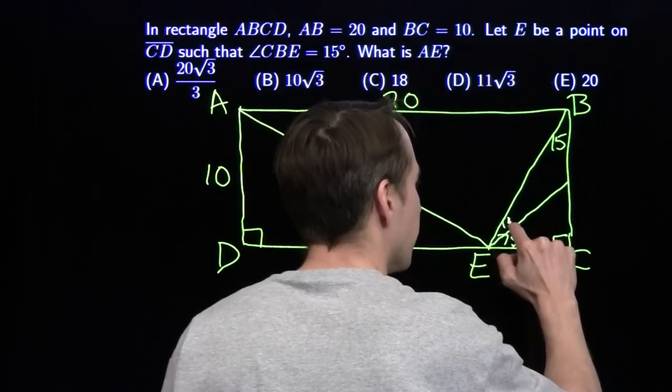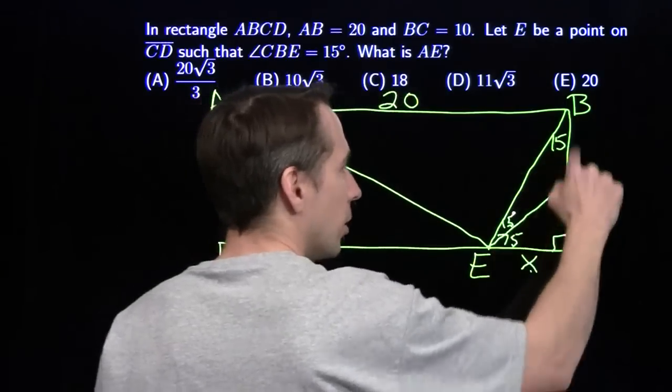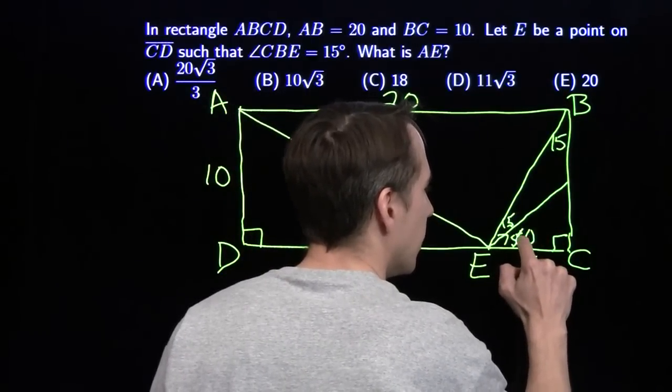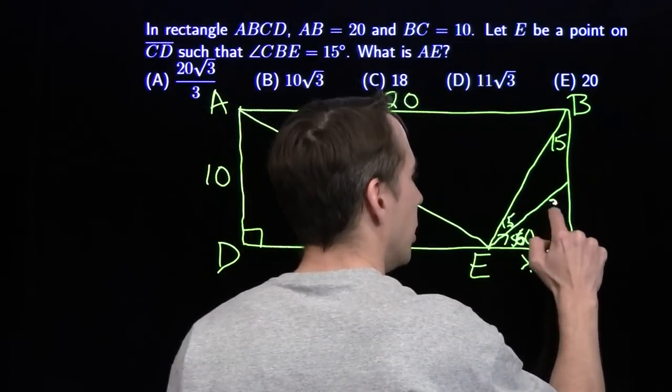So what I'm going to do here is I'm going to draw a line right in here and break out this isosceles triangle. It's 15 degrees. That's an isosceles triangle, and then this will be 60, and this will be 30 here.